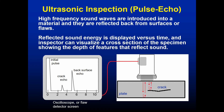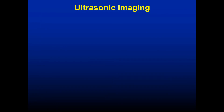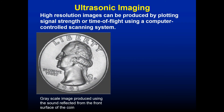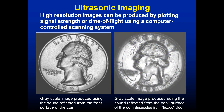Reflected sound energy is displayed versus time, allowing the inspector to visualize a cross-section of the specimen showing the depth of features that reflect sound. High-resolution images can be produced by plotting signal strength or time of flight using a computer-controlled scanning system. For example, a detailed grayscale sound image of a coin can be generated using advanced ultrasound techniques — this is not a photograph but an ultrasound image.